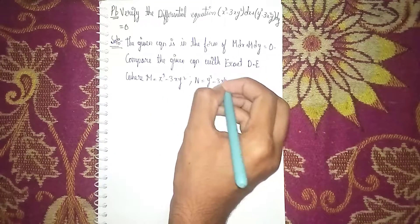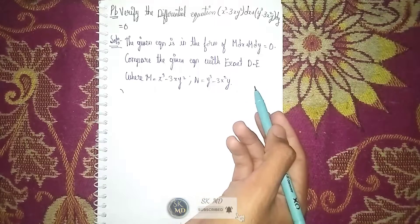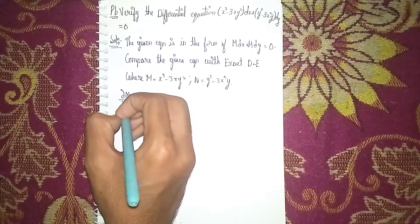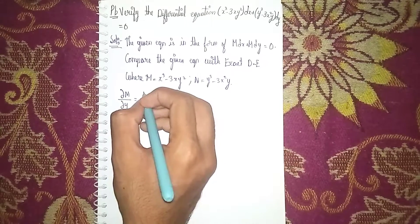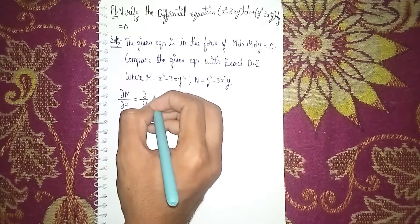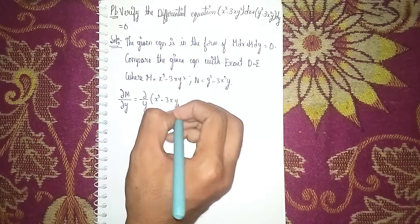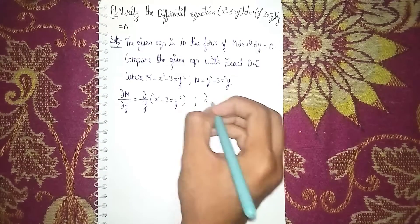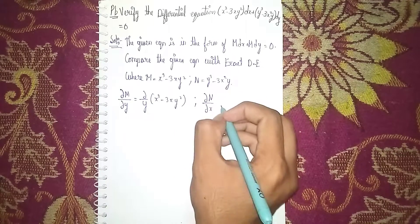So M = x³ - 3xy² and N = y³ - 3x²y. Now to check if it is exact, we apply: ∂M/∂y and ∂N/∂x. We differentiate M = x³ - 3xy² with respect to y.